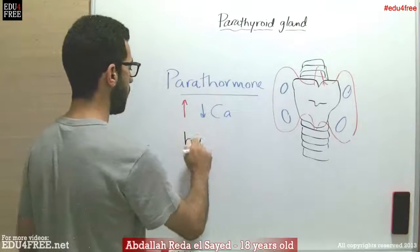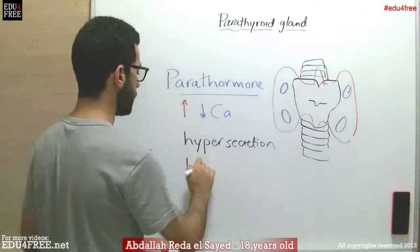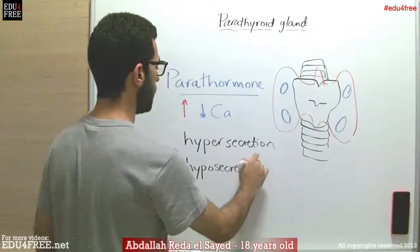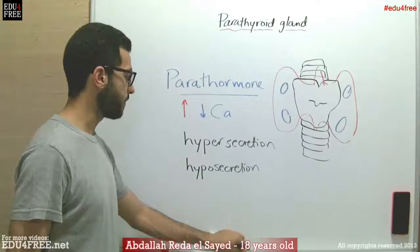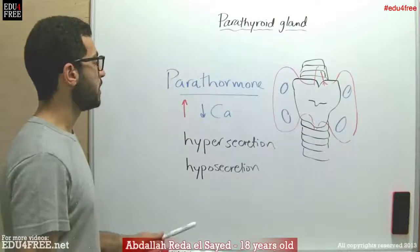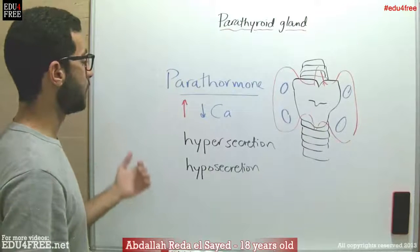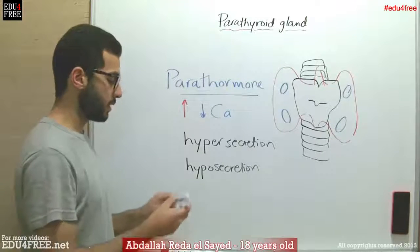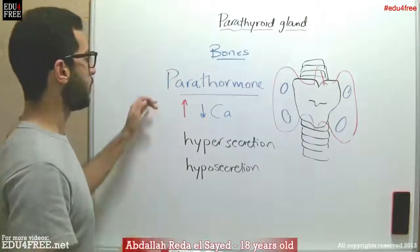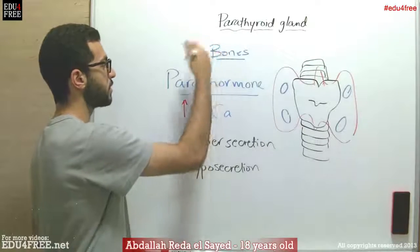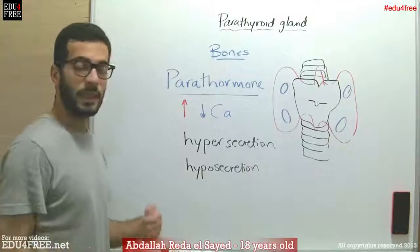The effects of its hypersecretion and the effects of its hyposecretion. Hypersecretion means increased secretion and hyposecretion means decreased secretion. In case of hypersecretion, parathormone increases the levels of calcium, so when its secretion increases, the levels of calcium will increase. The calcium is originally stored in bones, so when there is an abnormal secretion of parathormone, excess amounts of calcium will be extracted from bones. Accordingly, they will be liable and fragile, and will be exposed to bending and fracture.